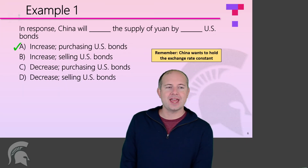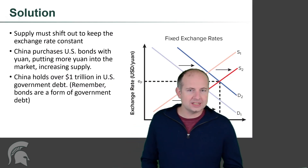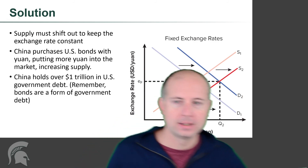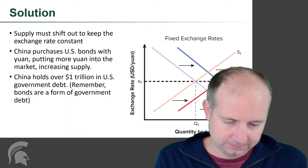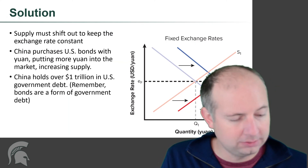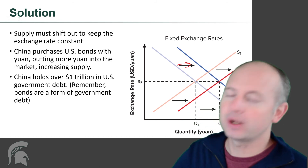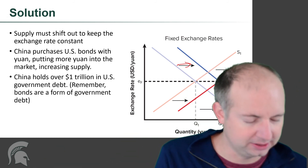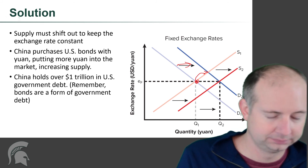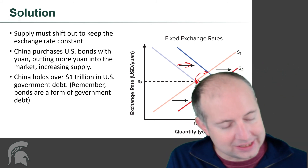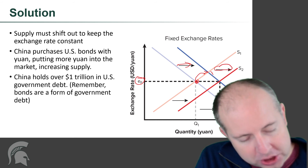The answer here is A. The first thing that happened was that demand shifted to the right. That's what happened when trade restrictions were lifted — US people could buy more stuff made in China. So there's an increase in demand, meaning we move from this point up to here on the graph.